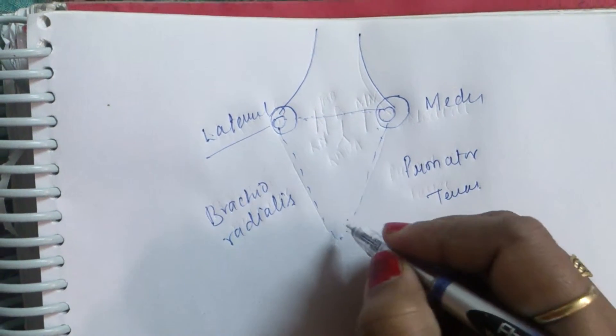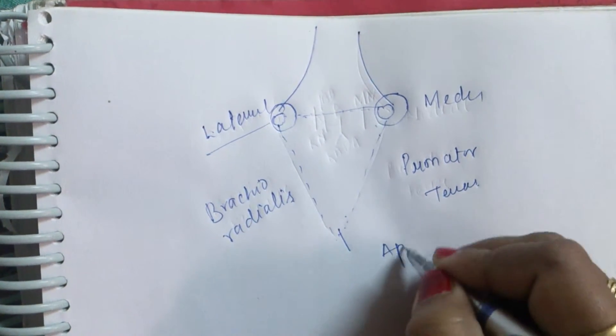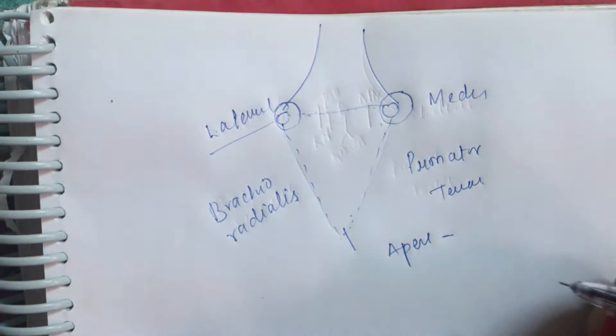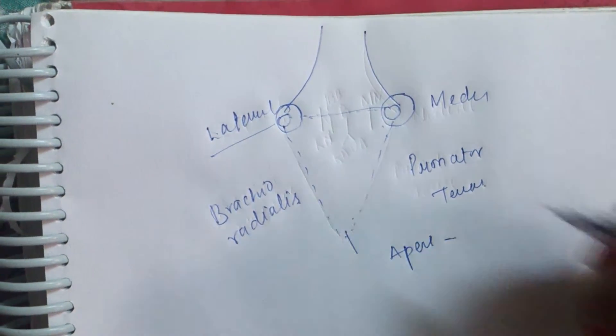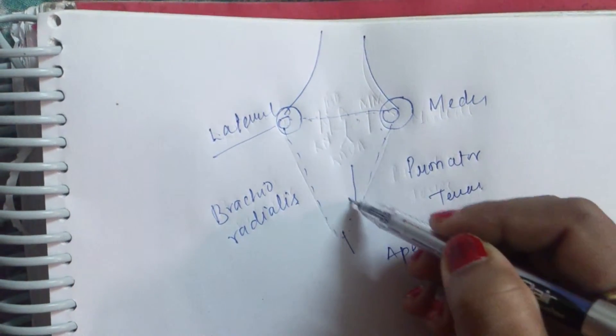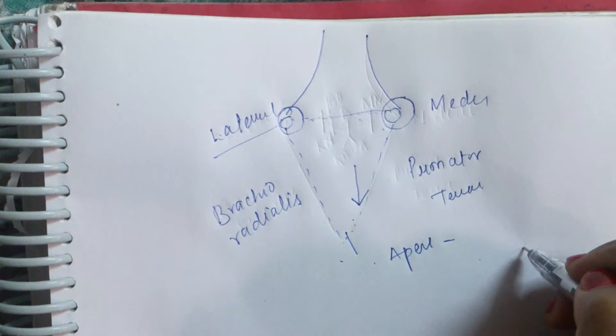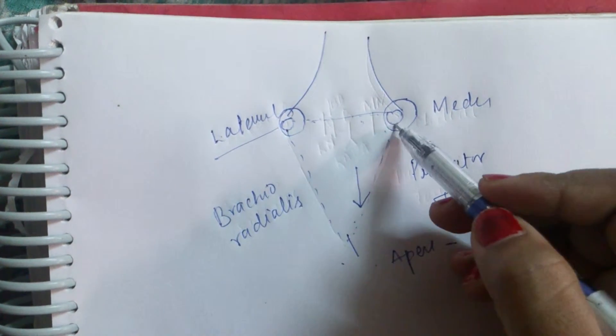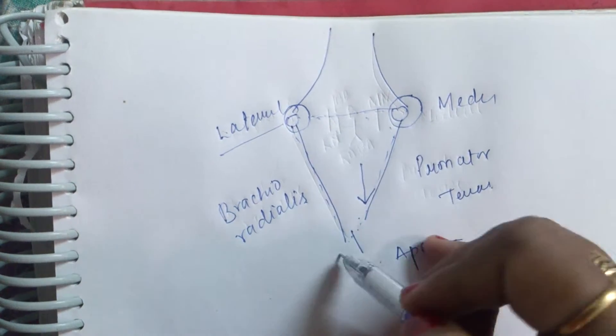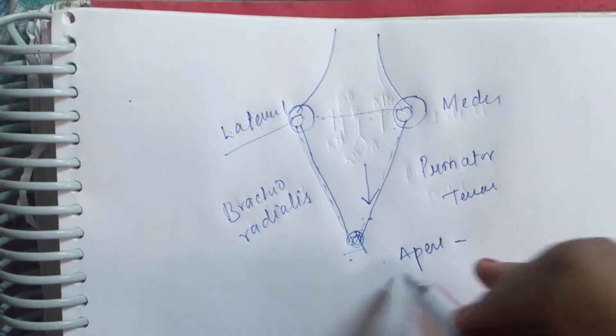And another one is the apex. Apex of the cubital fossa is directed downward and is formed by the meeting point of the lateral and medial boundaries. This lateral and medial boundaries unites to form the apex.